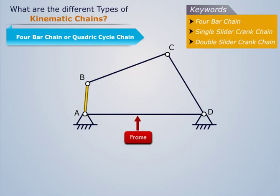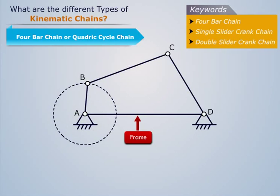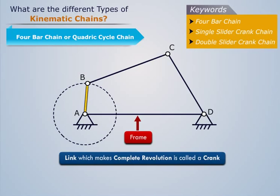Now if we apply some motion to link AB, then this link makes a complete revolution. Such a link which makes a complete revolution is called a crank.